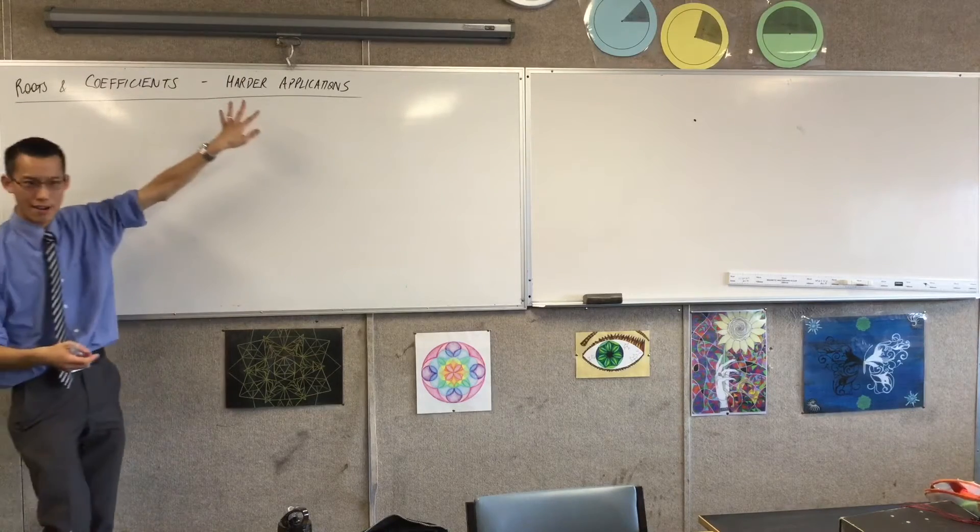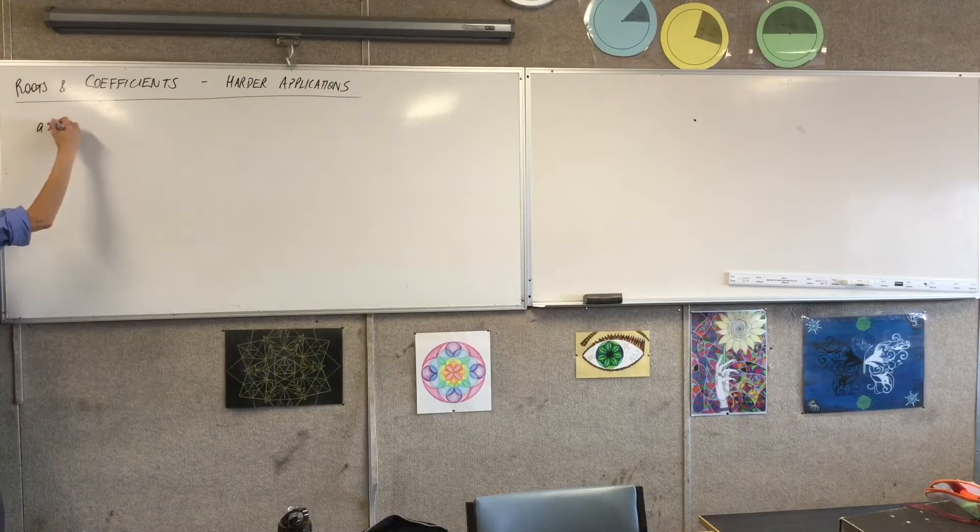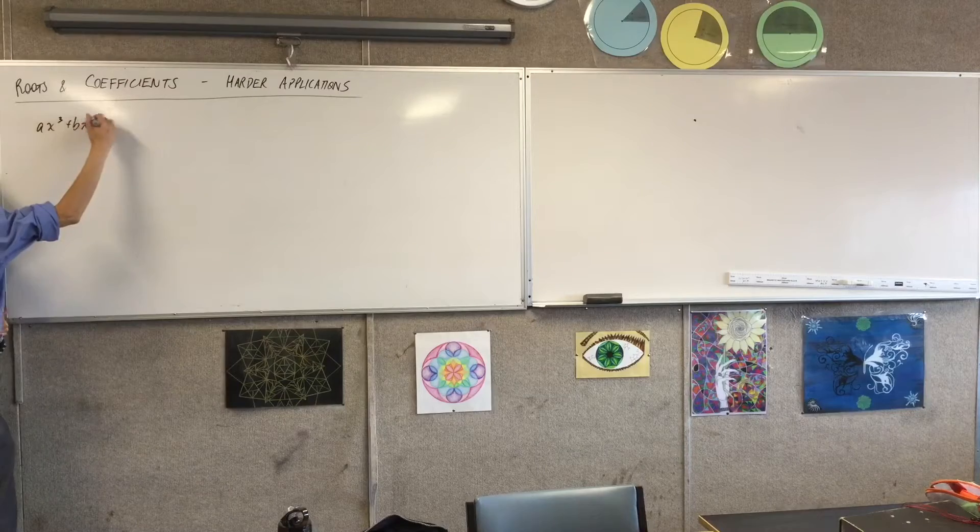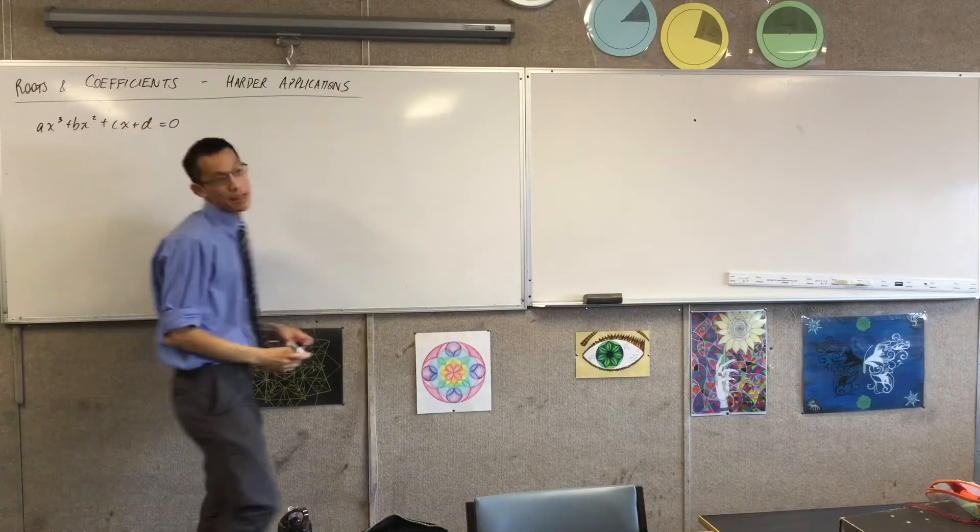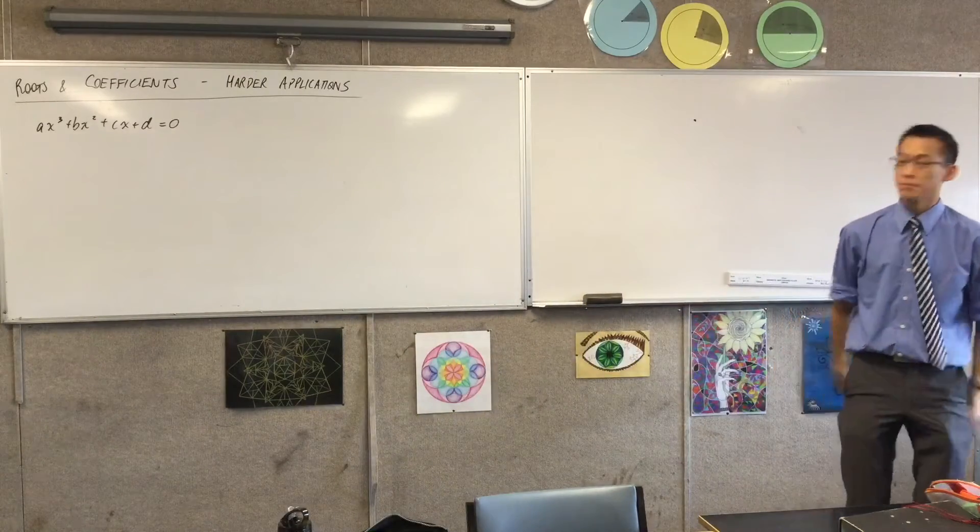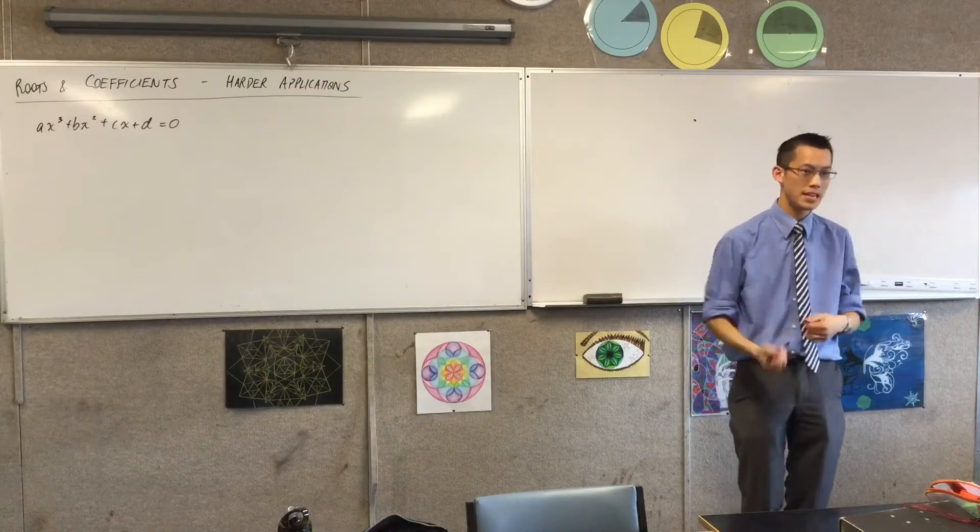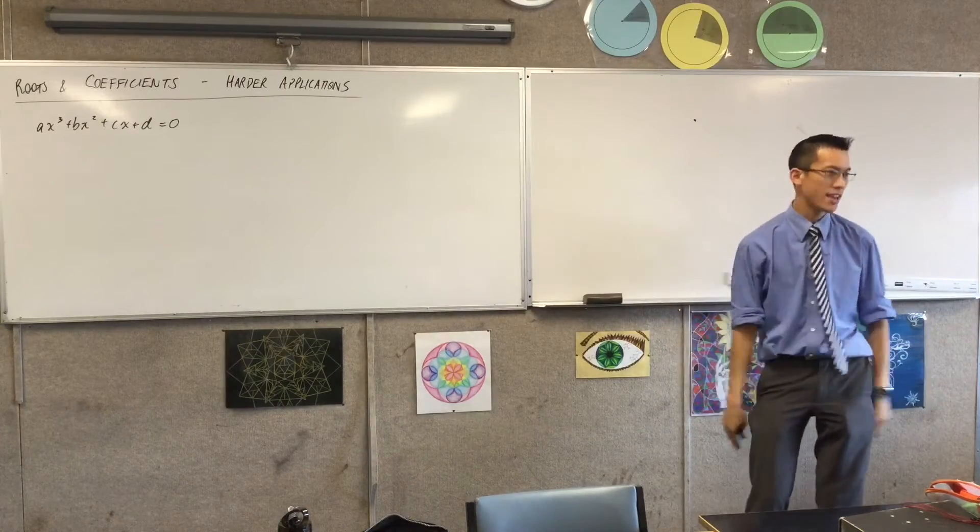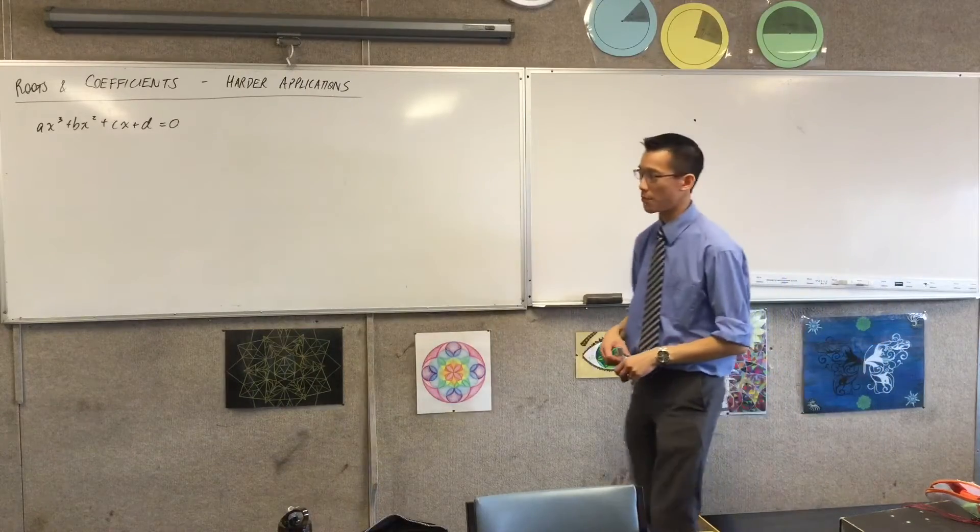So I want to show you a couple of harder applications. At the moment, you're used to questions like this, right? Something like this. And here, based on those coefficients a, b, c, d, and e, you can say, well, alpha plus beta plus gamma for this particular polynomial should be, in this case, minus b on a, c on a, minus d on a, etc. We've generalized these patterns before.